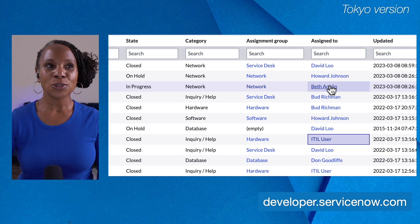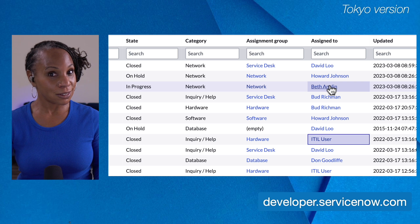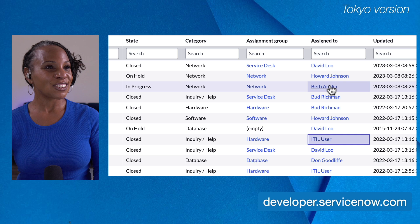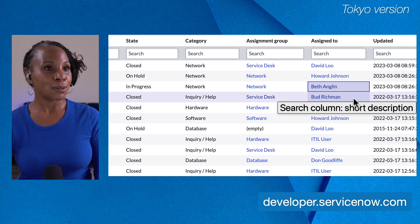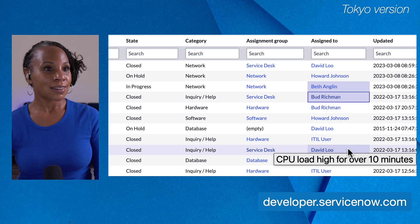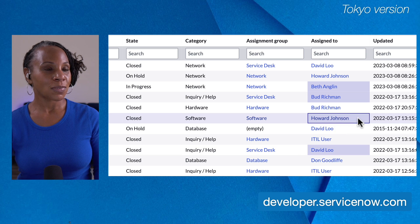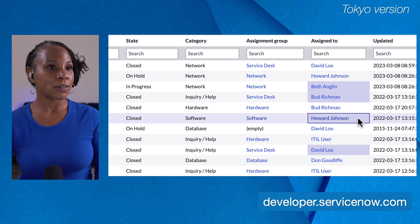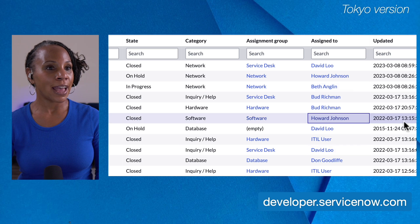But what if you want to do this to multiple records but they're not consecutive? You can do that too. You'll select shift, command, and then click on the empty area. Let's go ahead and select this record assigned to Howard Johnson. Now to update the field similarly, you'll double click on the empty area and you can go ahead and change the field value. We'll go ahead and select the red X to cancel this.